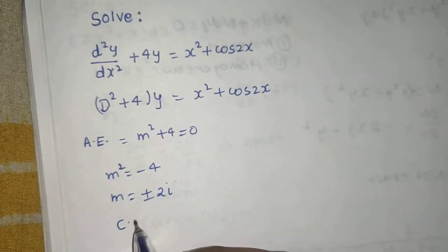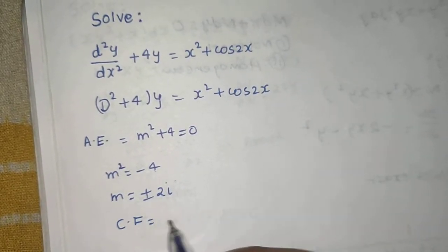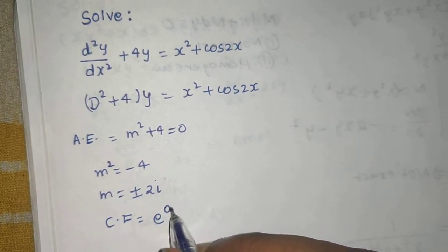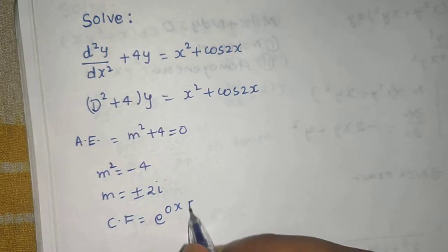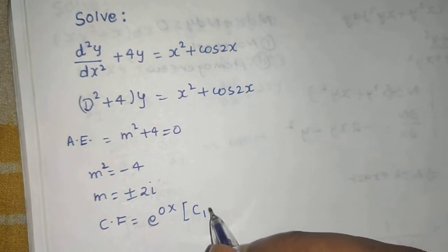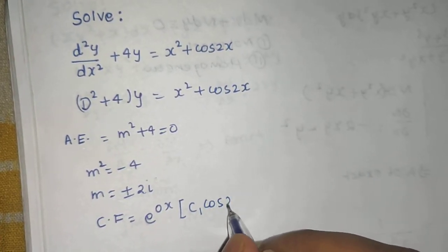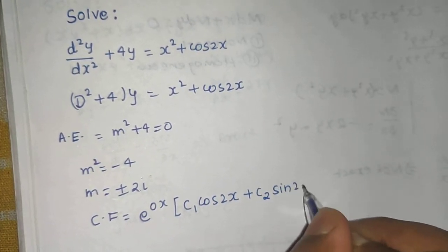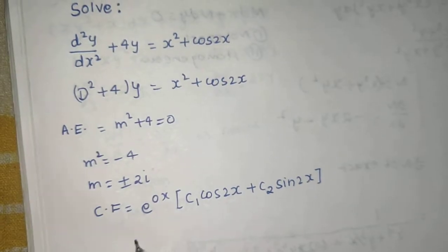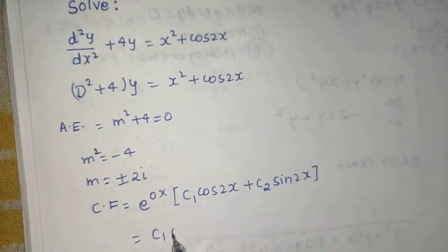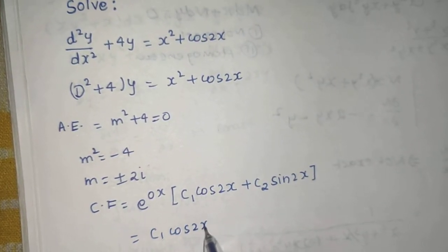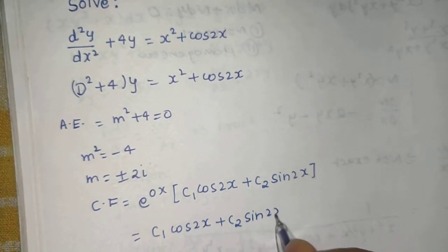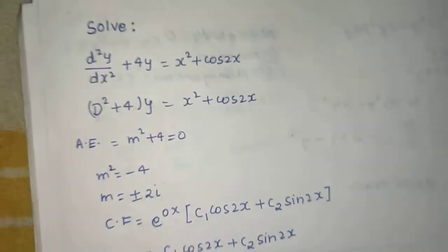So we can easily write our complementary function as e^(ax). So a is 0 because a + ib. So c₁cos(bx). So cos(2x), b is 2, plus c₂sin(bx) again 2x. So e^(0x) is 1. So c₁cos(2x) + c₂sin(2x). This is your complementary function.